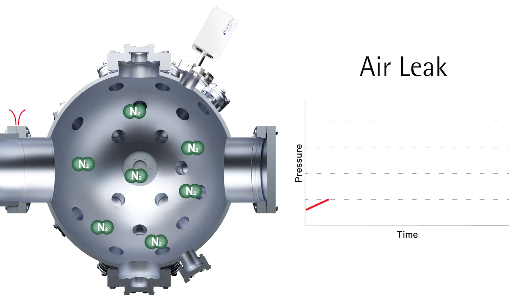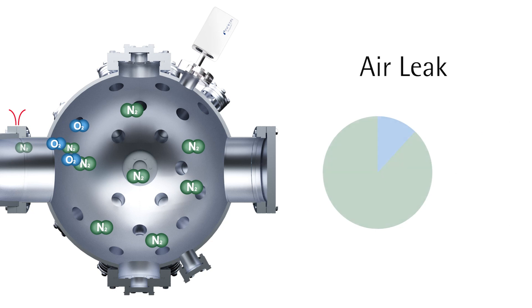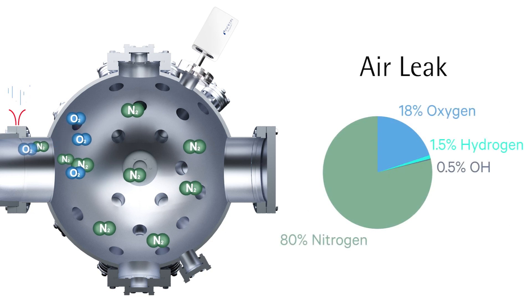If there is a leak, air molecules from the environment enter the chamber. This leads to a pressure increase over time, where the slope depends on the leak rate. Furthermore, the gas composition changes as air enters the previously pumped system.